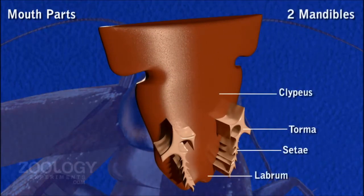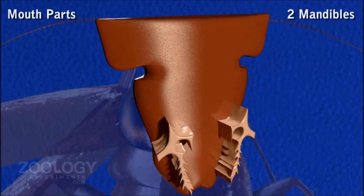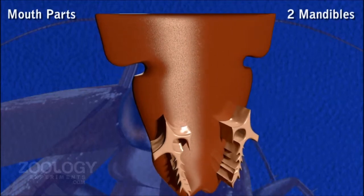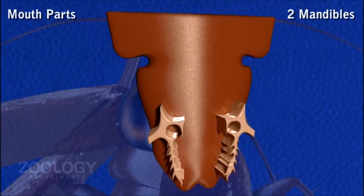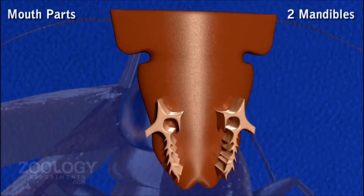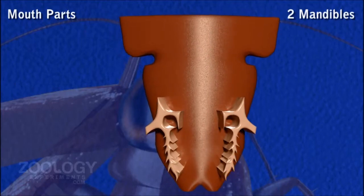Mandibles. Mandibles are composed of condyle, prostica, molar area and denticles, which are joined with abductor muscle and adductor muscle.